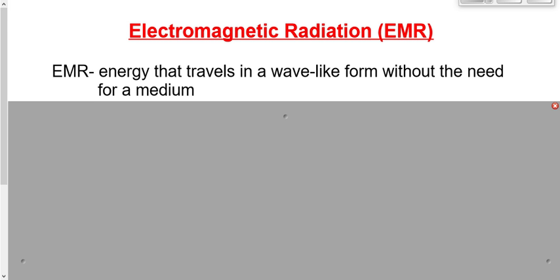Now, what does it consist of exactly? I'm going to do some things with my hands right now, so just have a look and see if you can recognize what I'm trying to demonstrate. Electromagnetic radiation consists of an electric field, which we looked at two units ago.